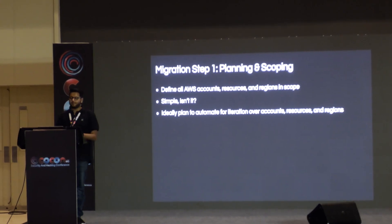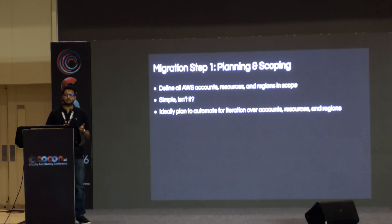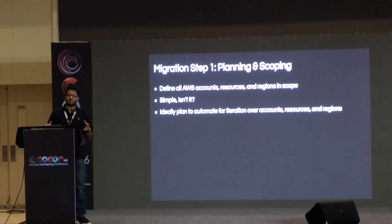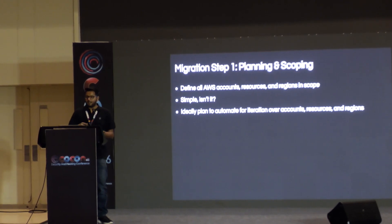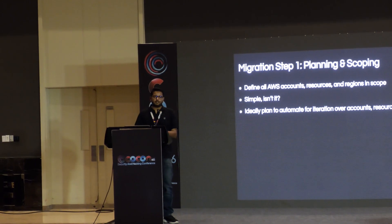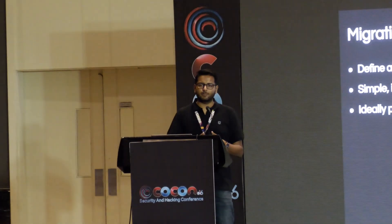The first step was planning and scoping. Certain accounts you might not want in the context of this migration — for example, your developer account. You want to keep it super low friction for developers and engineers to try out new things, and it's typically segregated from production environments anyway. So you can scope out those accounts. Similarly, you might want to exclude certain regions containing different kinds of workloads, or only tackle specific regions, or just migrate everything. This planning stage is an ideation phase where you work with your SRE, DevOps, or operations teams to figure out what your EC2 infrastructure looks like and how to approach the migration.